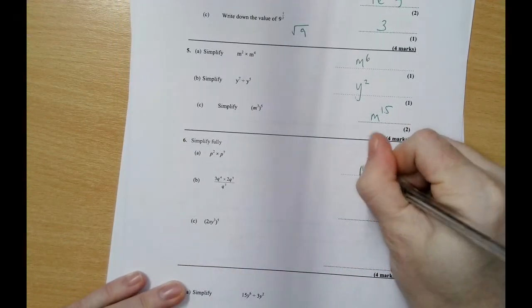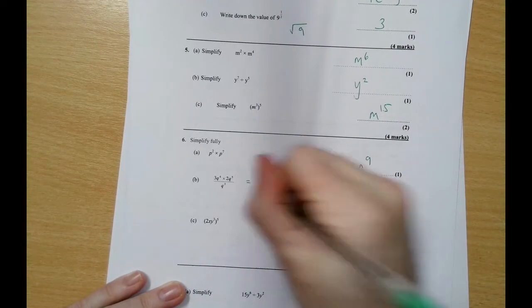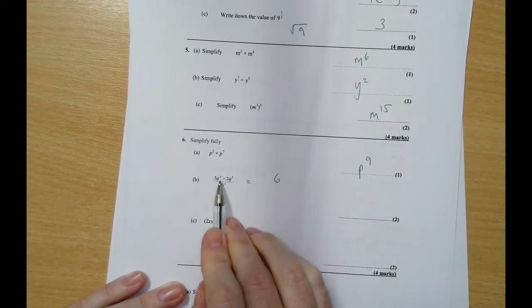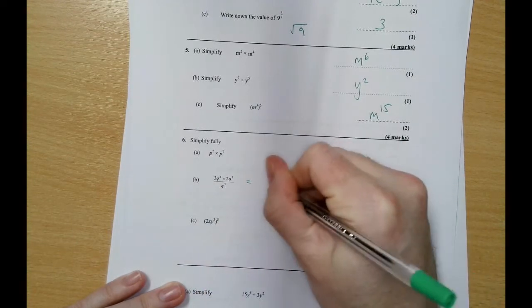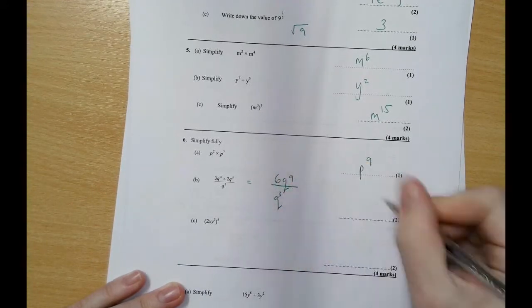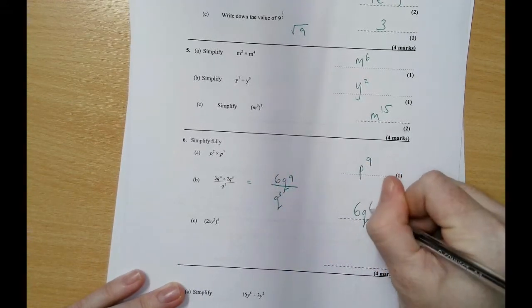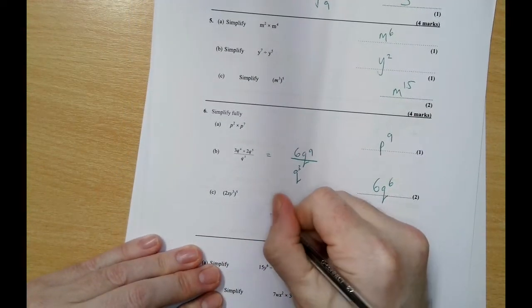p squared times p to the 7 is p to the 9. 3 times 2 is 6, so let's do this in two stages. 6 q to the power of 4 times q to the power of 5 is q to the power of 9 over q cubed. So the letters deal with the letters now, so we get 6 q to the power of 6.